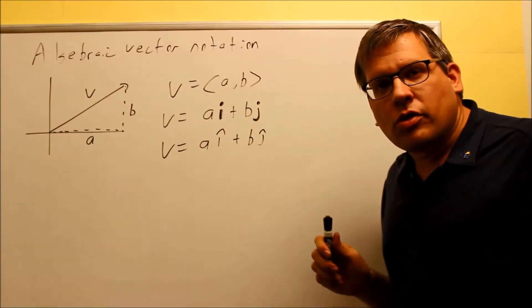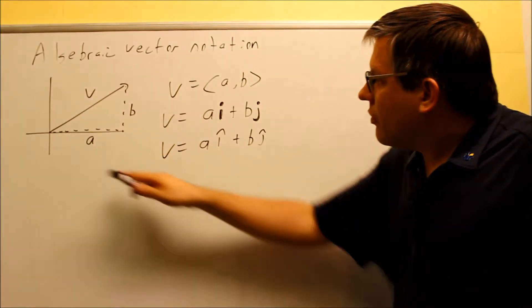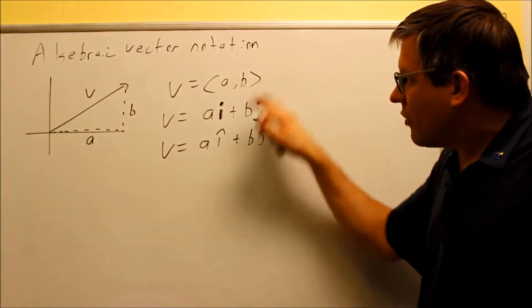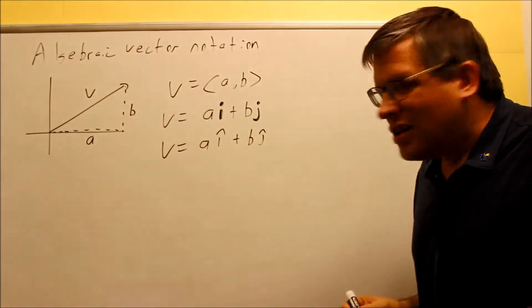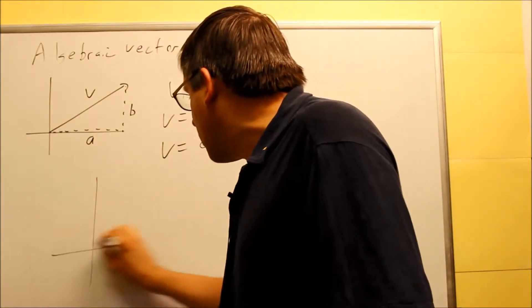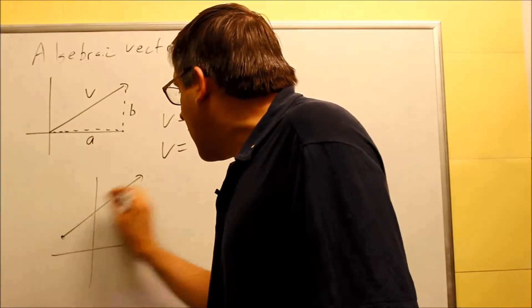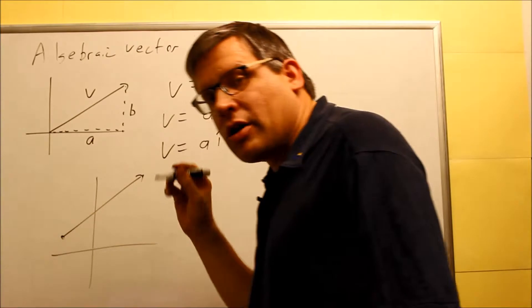Now ideally what you want to do is you want to get vectors that are drawn at the origin. But suppose, instead of giving it to you in the origin, let's suppose they give you a P1 and a P2. So let's say that you have a vector that's drawn like this, and you have it drawn two different places.